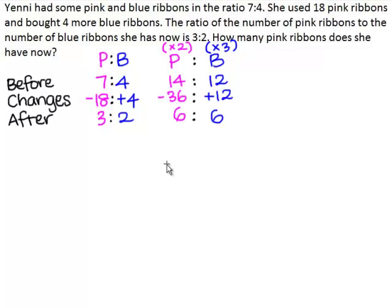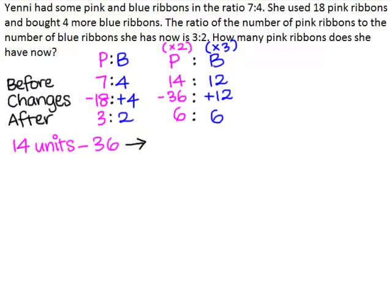Now we can see in the last row that these two numbers are the same. And when these two numbers are the same, we can equate the unit values of the two elements. So what we will do is equate the pink ribbons and the blue ribbons. Here we see 14, and this means 14 units. Here we have minus 36. This is the same as: here we see 12, and this means 12 units, and here we have plus 12. So 14 units minus 36 is the same as 12 units plus 12.